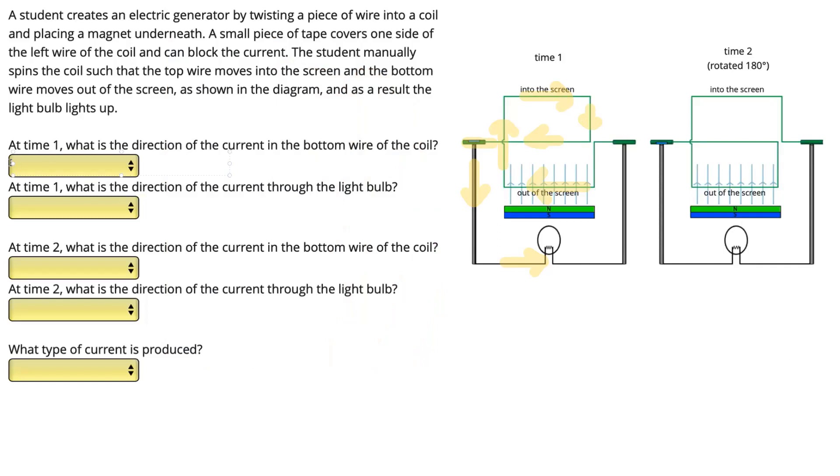What's the direction of the current in the bottom wire of the coil? It's going to the left. What is the direction of the current through the light bulb? It's to the right. Okay, so next we'll look at time 2.